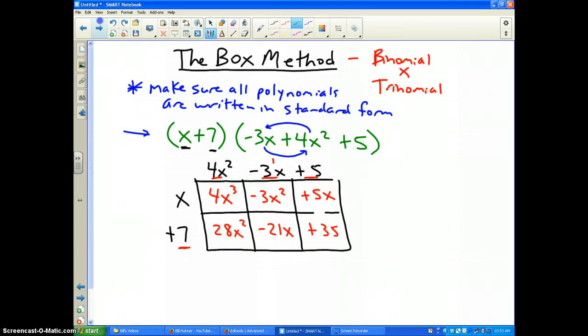Now the nice thing about this is when you do the box method, you're going to notice the diagonals are the like terms, which you have to combine. So 4x³ is its own separate identity, and there's nothing to combine with it. So I'm just going to write 4x³, and I'm going to write my answer in standard form.